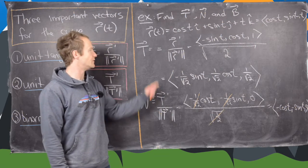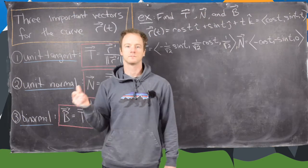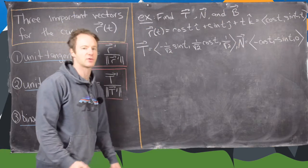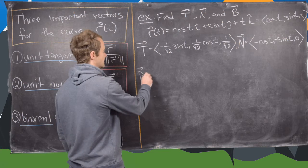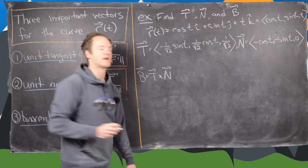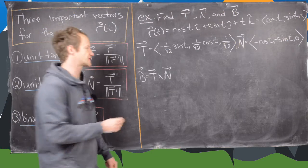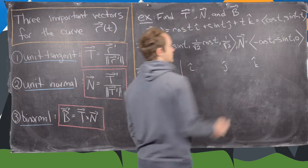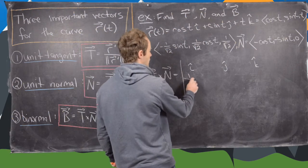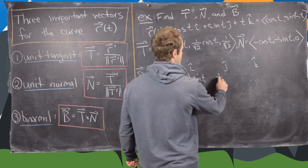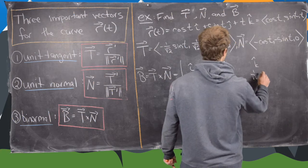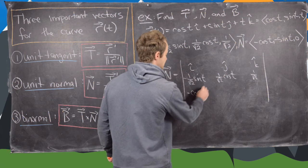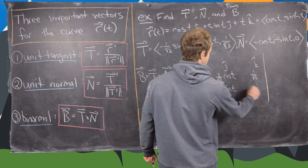Now let's find the binormal vector B = T × N using the 3×3 determinant form of the cross product. The first row is i, j, k. The second row (from T) is (−(1/√2) sin t, (1/√2) cos t, 1/√2). The third row (from N) is (−cos t, −sin t, 0).